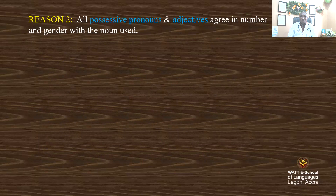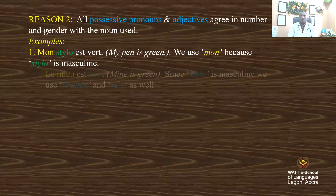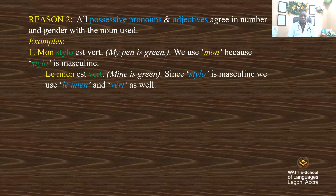Reason two: all possessive pronouns and adjectives agree in number and gender with the noun used. Example: 'mon stylo est vert' — my pen is green. We use 'mon' because stylo is masculine. 'Mon' is a possessive adjective here. The possessive pronoun is 'le mien est vert' — mine is green. Since stylo is masculine, you use 'le mien' and 'vert'.